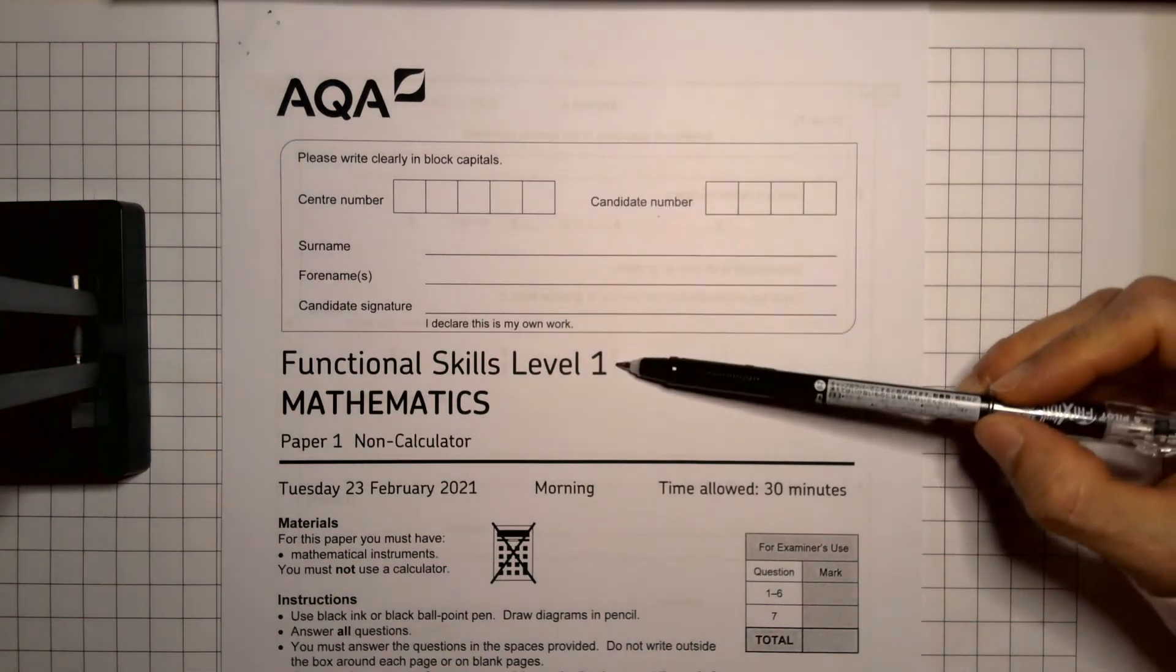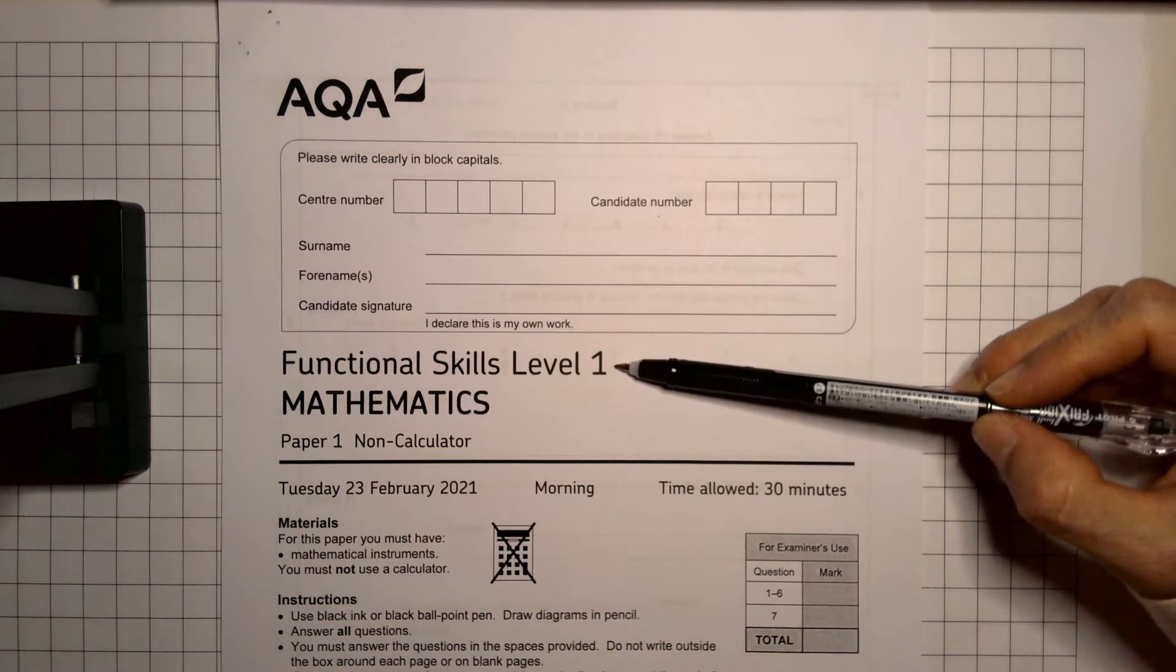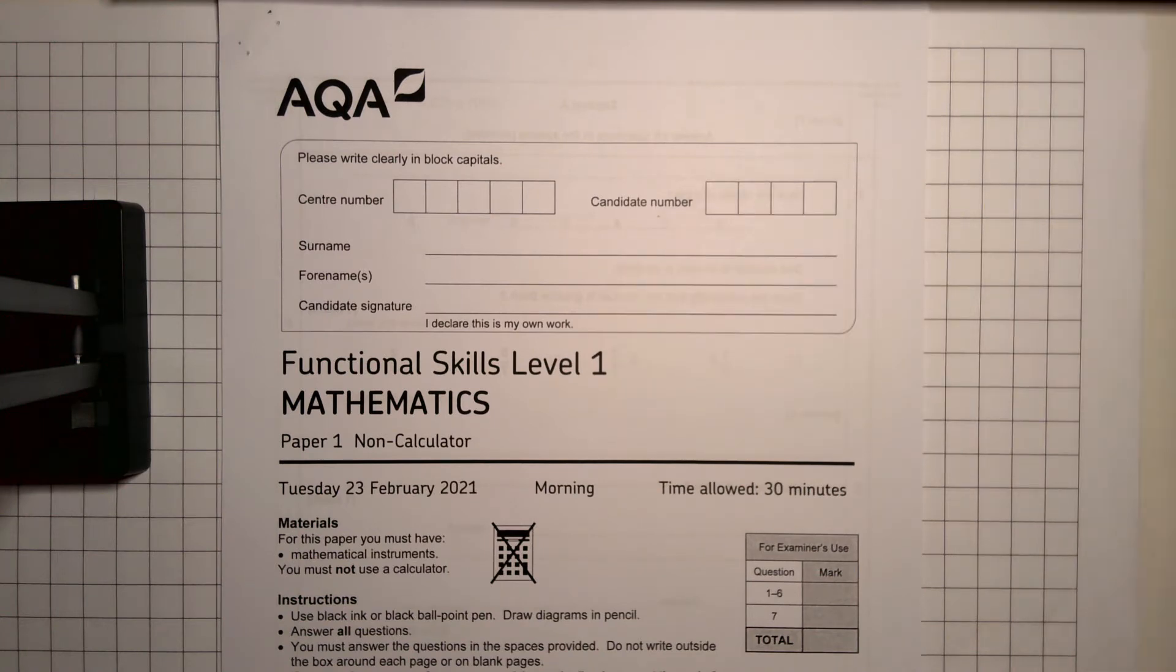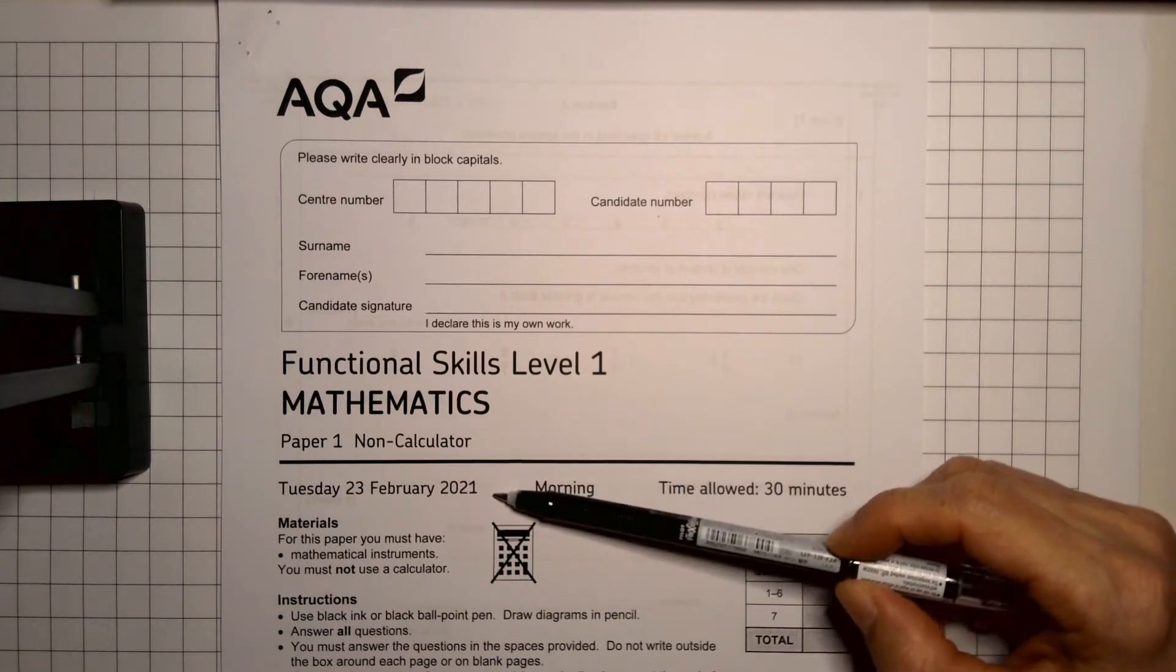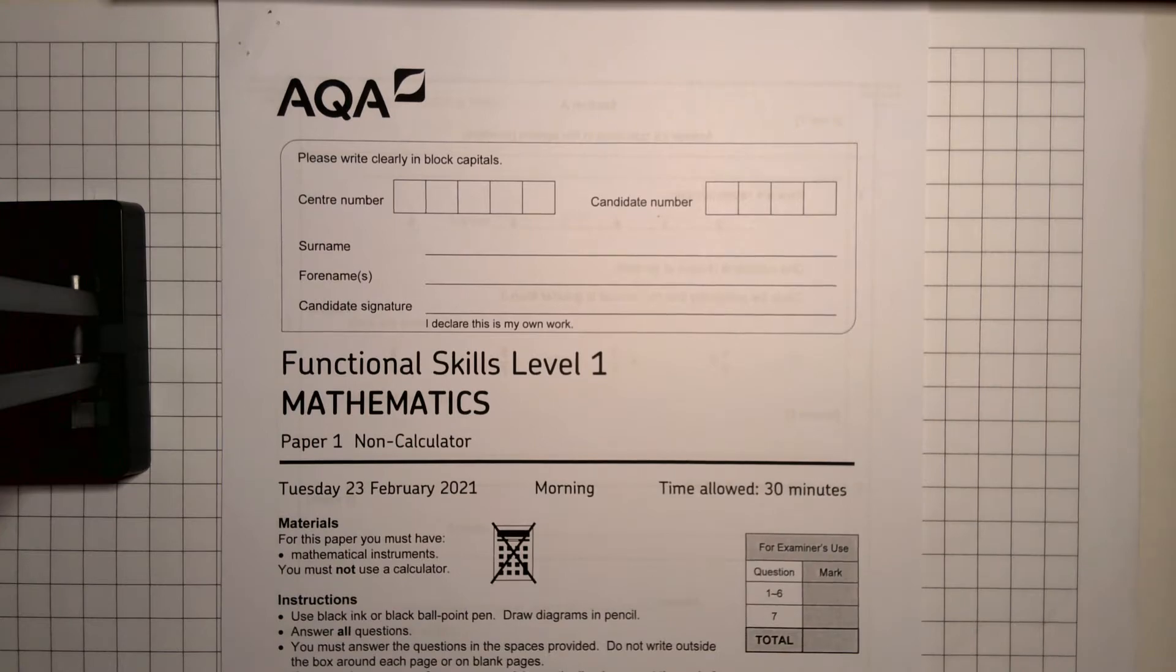Hello, this is the AQA functional skills level one mathematics paper one, the non-calculator paper for February 2021. We have half an hour to do it in, so let's give it a go.